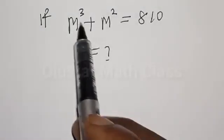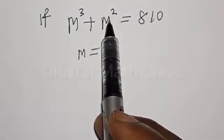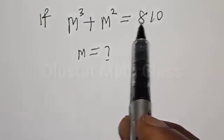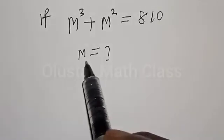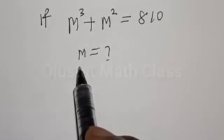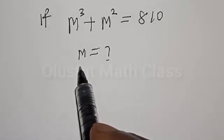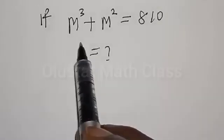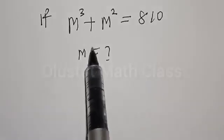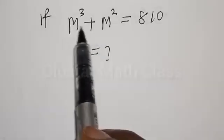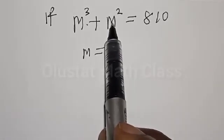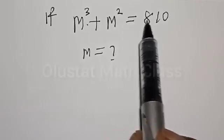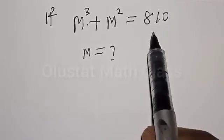If MQ plus M squared is equal to 810, what is the value of M? Welcome to my class. In today's class, we want to look at how we can quickly find the value of M from this given equation: MQ plus M squared is equal to 810.